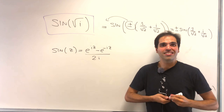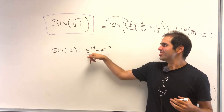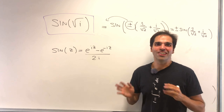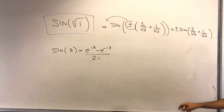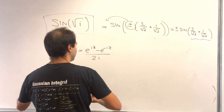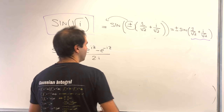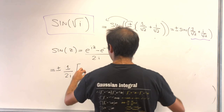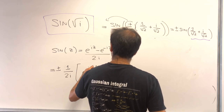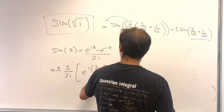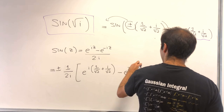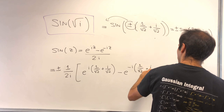You might say this is too easy, but it's e^(iz) − e^(−iz) over 2i. With z = 1/√2 + i/√2, you just plug this in. So we get ±(1/2i) times e^(i·(1/√2 + i/√2)) minus e^(−i·(1/√2 + i/√2)).